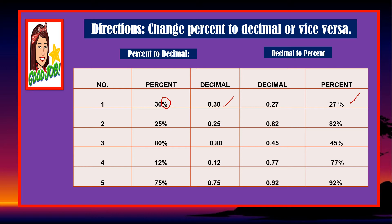Under decimal to percent, we have to move the decimal point going to the right — two places to the right, one and two — and then put a percentage sign. Number two, we have 25 percent to decimal. Again, the same: remove the percentage sign, and then put a decimal here, or move the decimal two places to the left — one and two. The answer is correct.